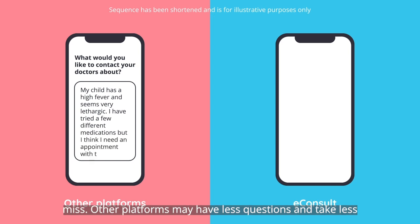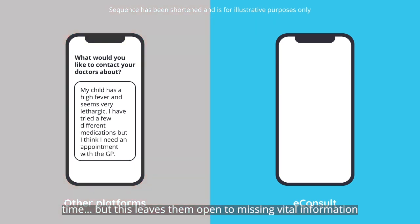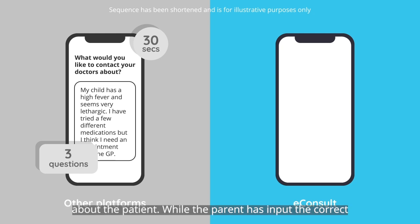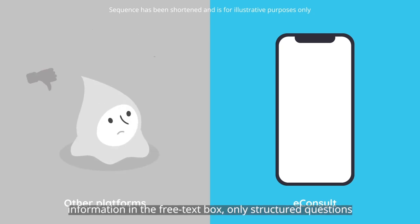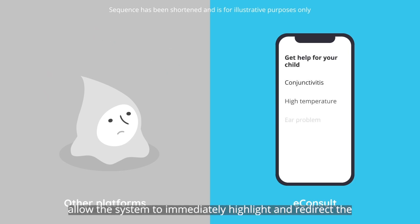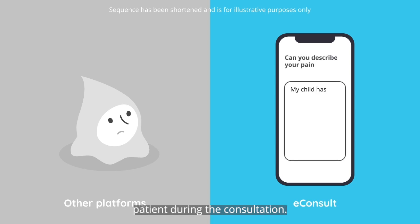Other platforms may have fewer questions and take less time, but this leaves them open to missing vital information about the patient. While the parent has input the correct information in the free text box, only structured questions allow the system to immediately highlight and redirect the patient during the consultation.